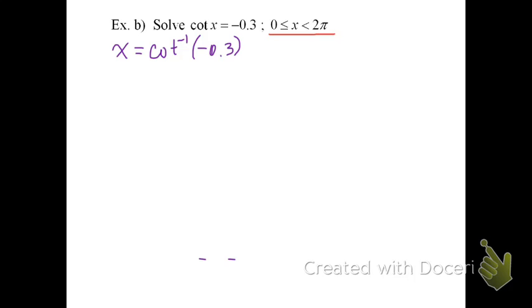And then, remember, we don't like working with cotangents, so we're going to use the reciprocal of that, which is tangent inverse, and then we're going to use the reciprocal of this ratio also. One way you can write it is 1 divided by negative 0.3.